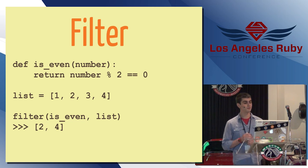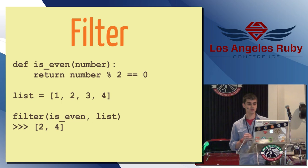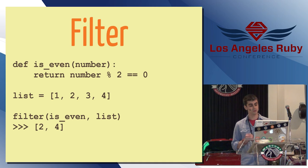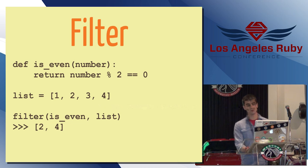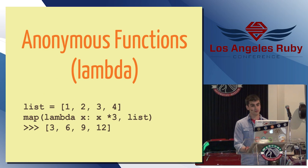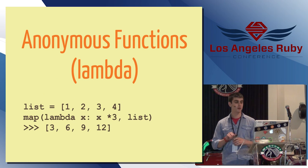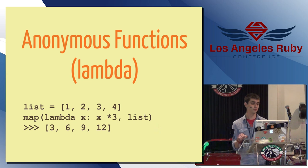And then we have anonymous functions in Python called lambdas, which are also available in Ruby, though it's a little different. So, again, with this map function, I don't have to write a function elsewhere if I don't want to. I can just do a lambda in place like that. So, I can say lambda x, x times 3, apply that to the list and every element will be tripled. There are some other limitations to lambdas, but we'll talk about that a bit later.